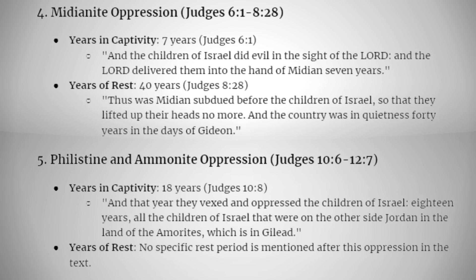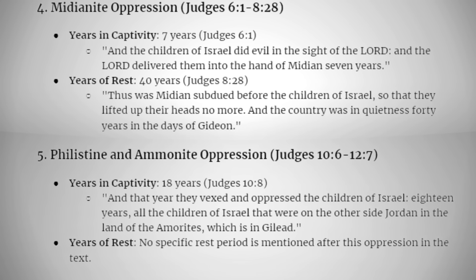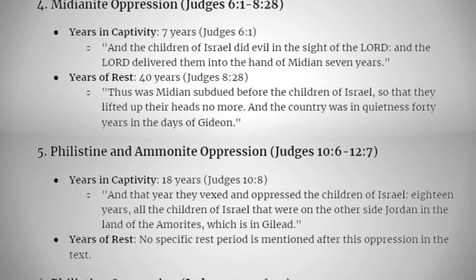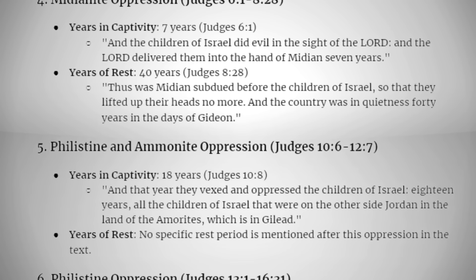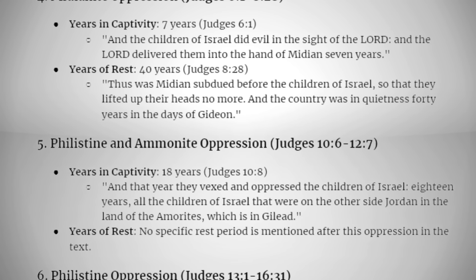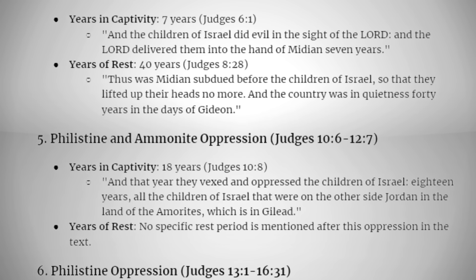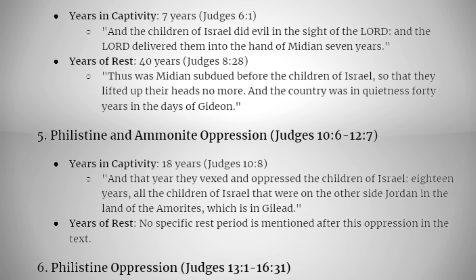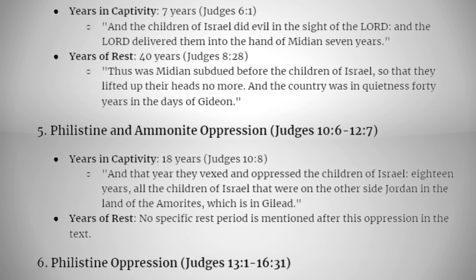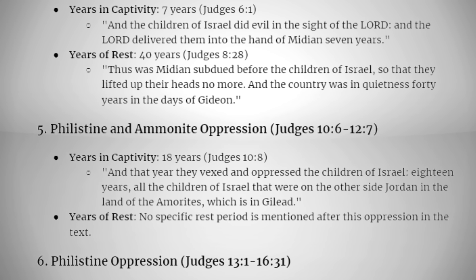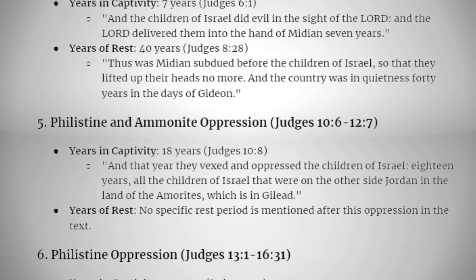Midianite oppression (Judges 6:1-28): years in captivity — 7 years. Judges 6:1: "And the children of Israel did evil in the sight of the LORD, and the LORD delivered them into the hand of Midian seven years." Years of rest — 40 years. Judges 8:28: "Thus was Midian subdued before the children of Israel, so that they lifted up their heads no more, and the country was in quietness 40 years in the days of Gideon."